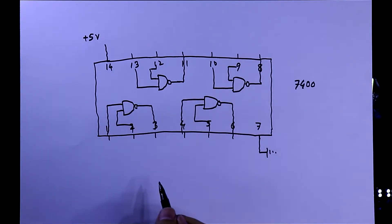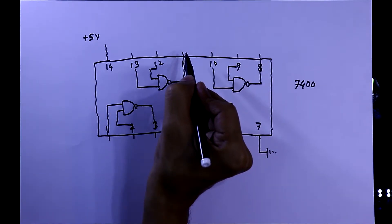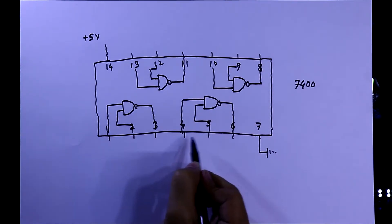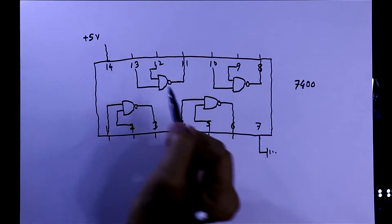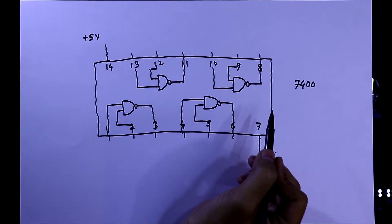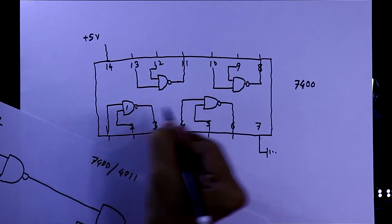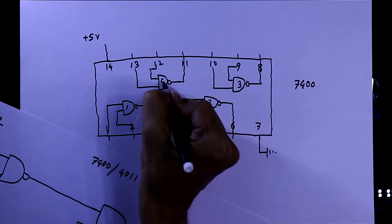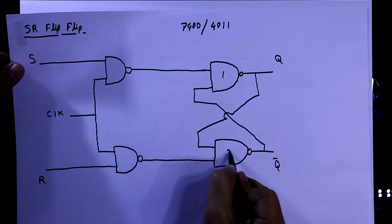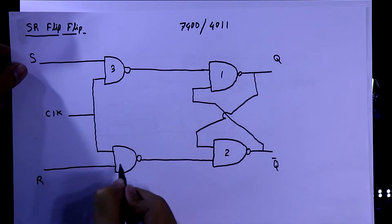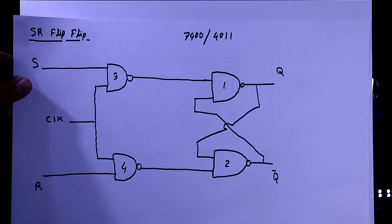Pin numbers 3, 6, 8, and 11 are the outputs, and pins 1, 2, 4, 5, 9, 10, 12, and 13 are the inputs of the four NAND gates. Here is our SR flip-flop using gates one, two, three, and four. To make this circuit we have to follow the pin diagram.